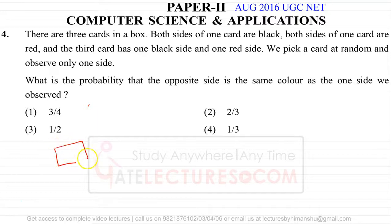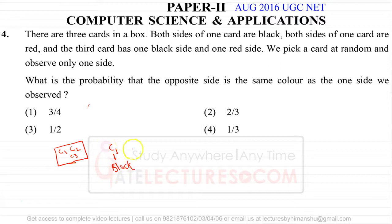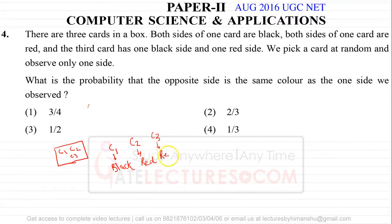Let's say you have a box and you have three cards: C1, C2, and C3. C1 is black from both sides. C2 is red from both sides, and C3 has one side red and one side black.